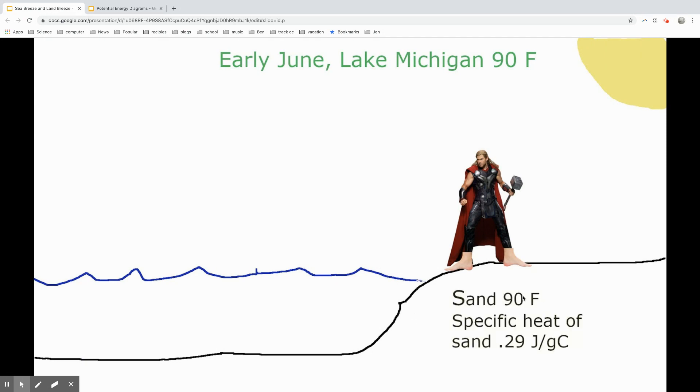That sand is hot! Sand will be 90 degrees as well. It has a very low specific heat of 0.29 joules per gram degree Celsius. So as soon as the air is 90 degrees, the sand's probably going to be 90 degrees as well. It's really hot. Now if you dig your feet in a little bit, you'll find cold sand under there, but that top layer is going to be hot.